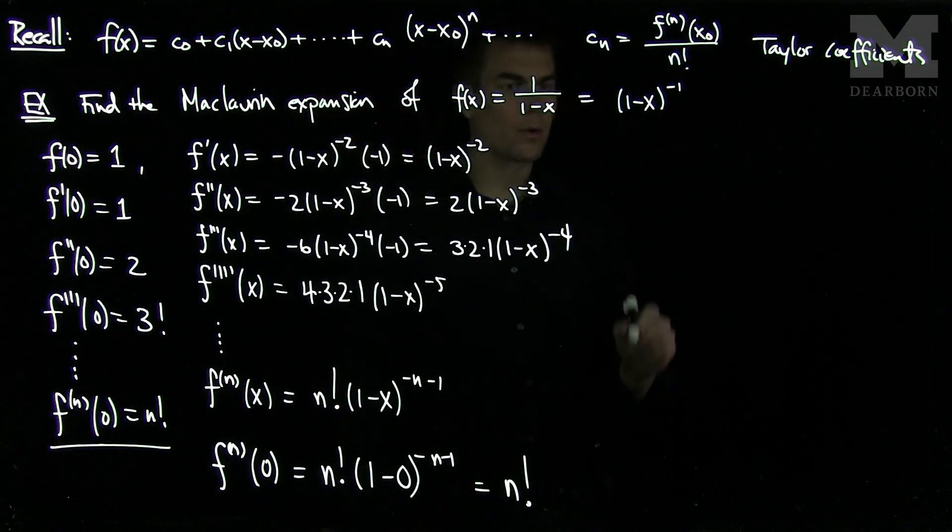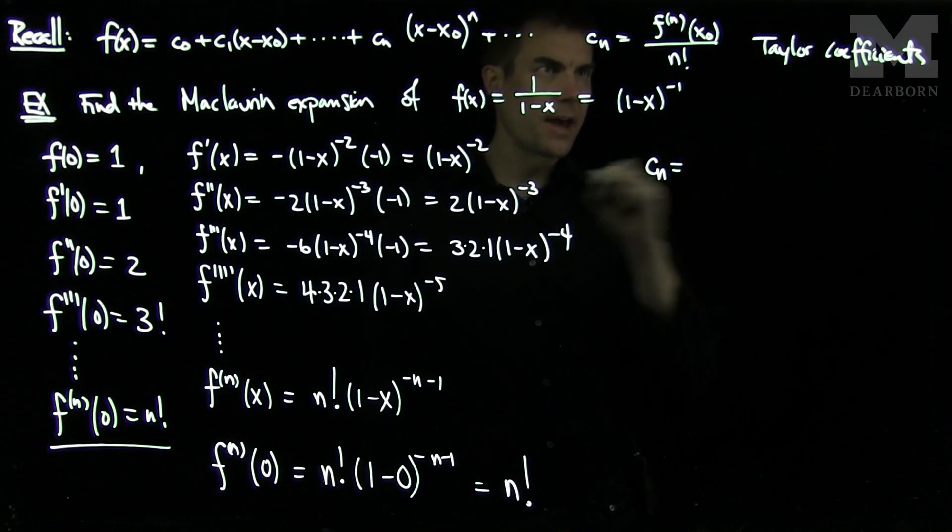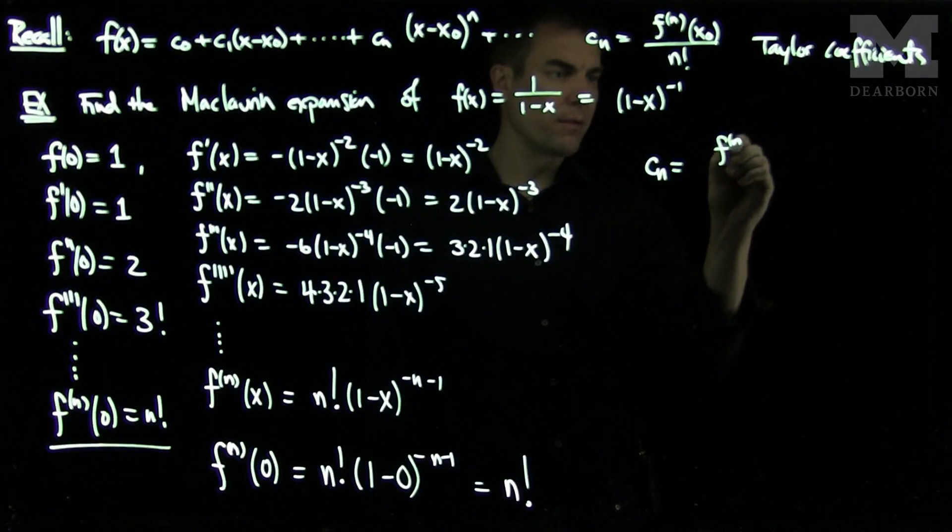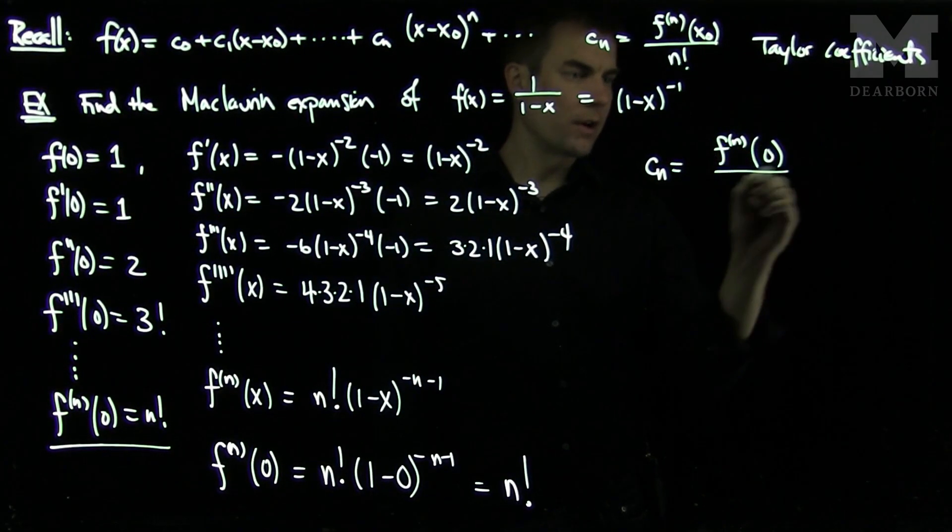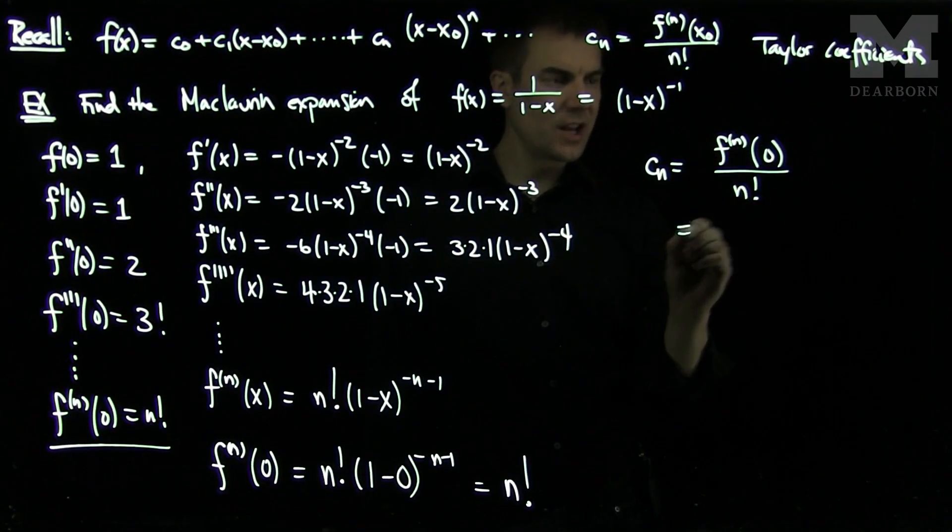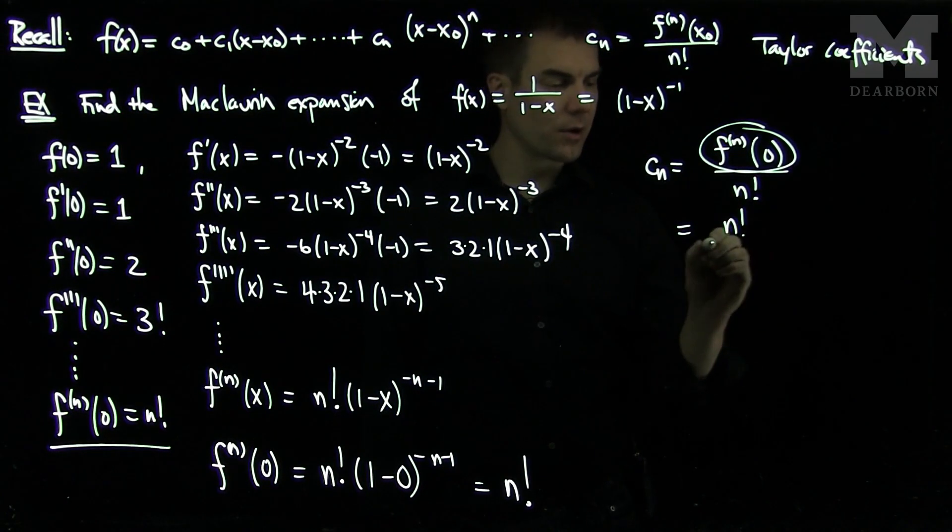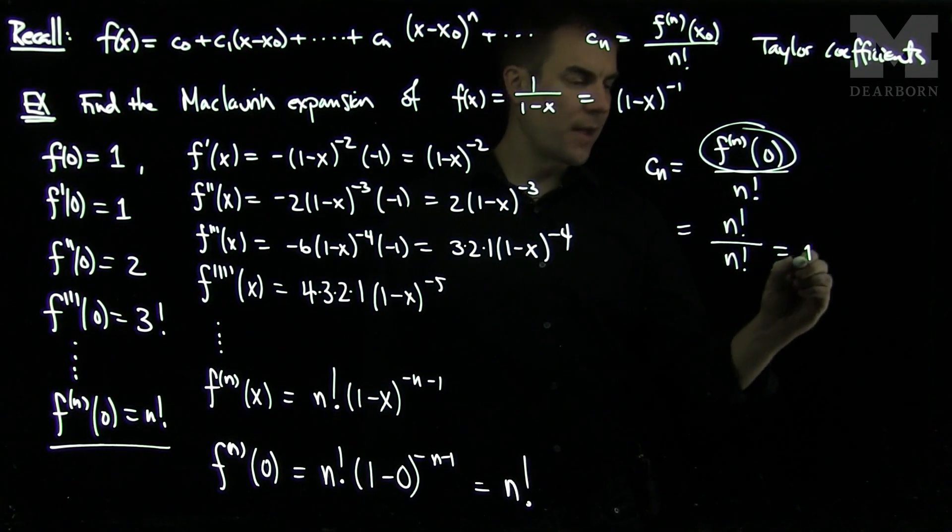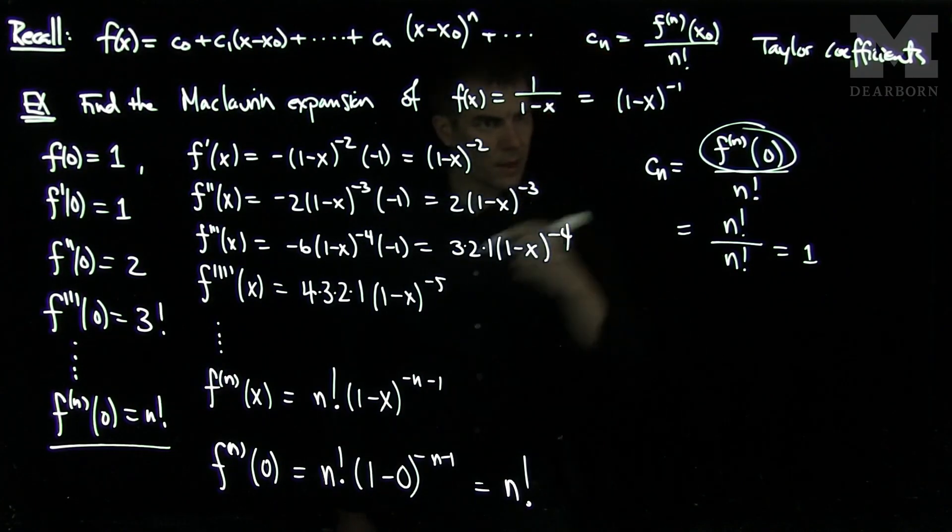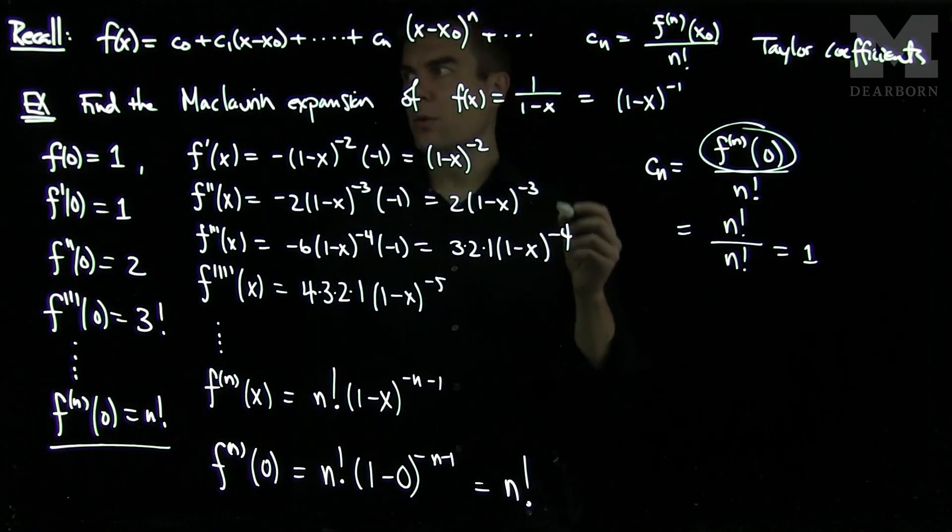So now we look back at our coefficients. So our coefficients cn have to be the nth derivative at 0 over n factorial. But we've just seen that the nth derivative at 0 is n factorial itself. So this is n factorial over n factorial, and that is just equal to 1. So our cn's are equal to 1.